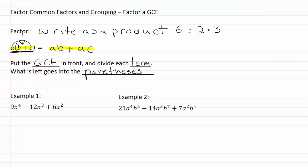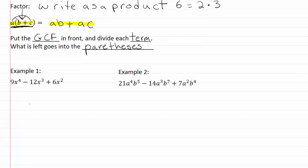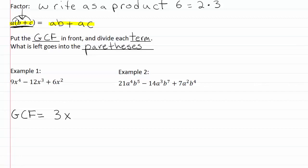Let's look at a couple of examples. Our first example is 9x⁴ minus 12x³ plus 6x². The first thing we have to do is find our GCF. We need to find what number goes into each of these coefficients. They're all divisible by three — nothing bigger will go in — so we've got a three. Then we take the smallest exponent on the x, which is two, so we've got x squared.